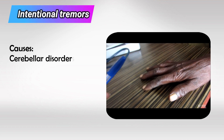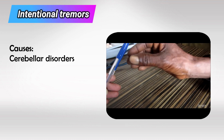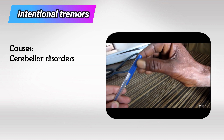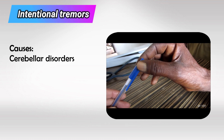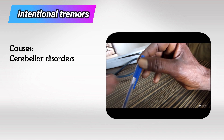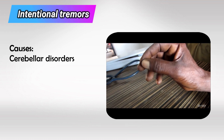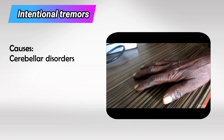Intentional tremors are tremors that occur when somebody tries to move their muscles — mainly the upper limbs, especially if they try to reach something far away. We see this in cerebellar disorders.